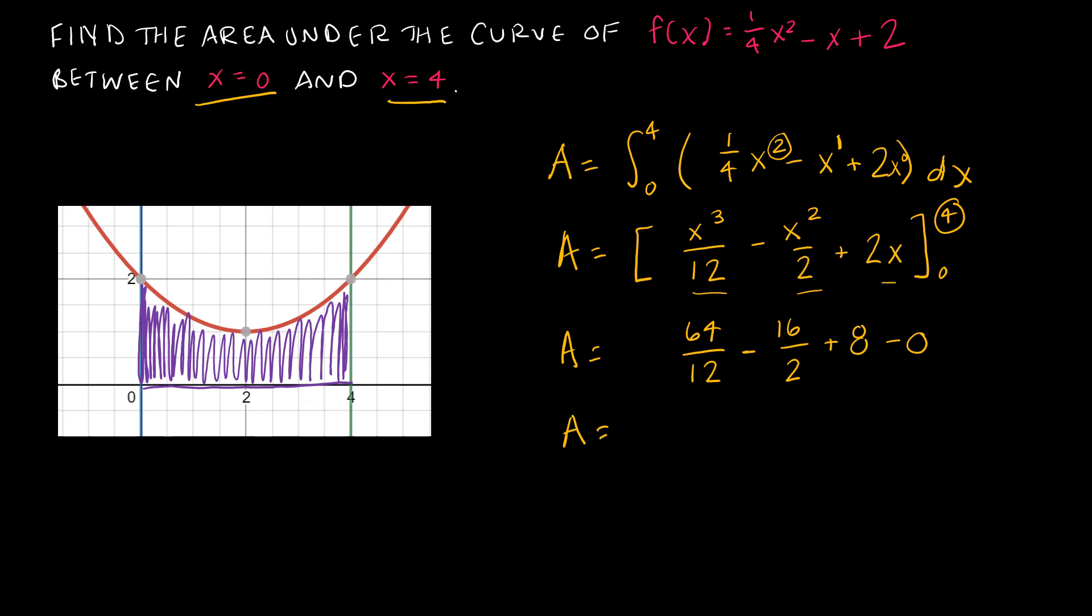So now I'm just going to do some simplification. This is 5 and 1/3, this is minus 8, this is plus 8. Minus 0 doesn't matter. So my area is 5 and 1/3 units squared.